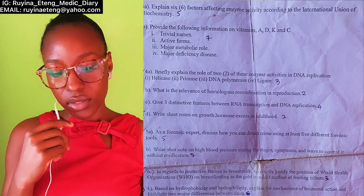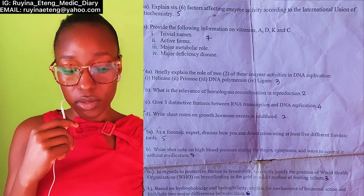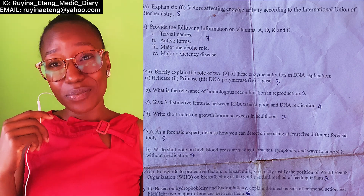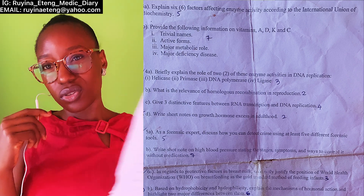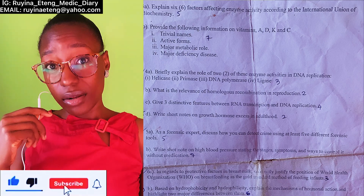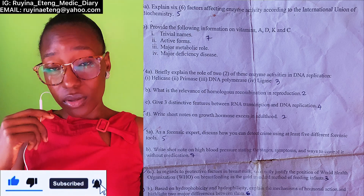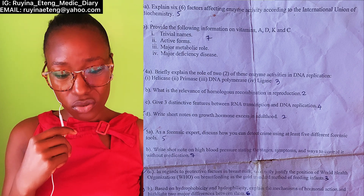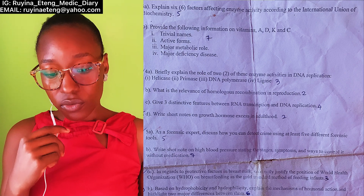Question 3A: 'Explain six factors affecting enzyme activity according to the International Union of Biochemistry.' This one is also straightforward — you just list pH, temperature, substrate concentration, enzyme concentration, and so on. If there's a graph, show the graph on how it actually affects enzyme activity.